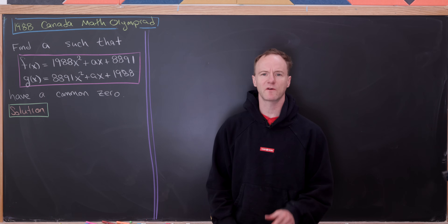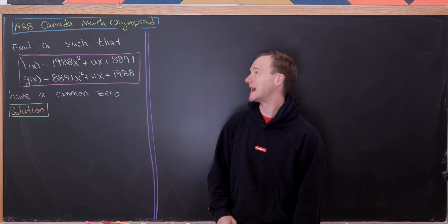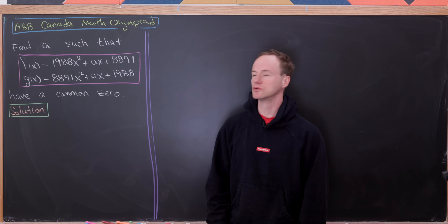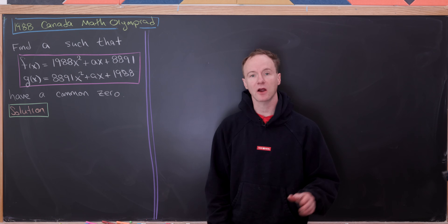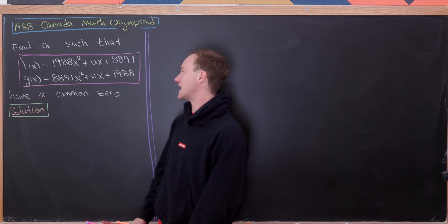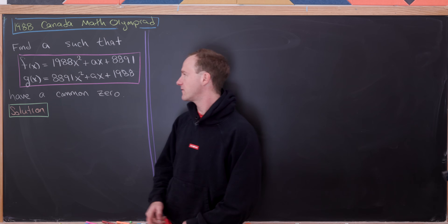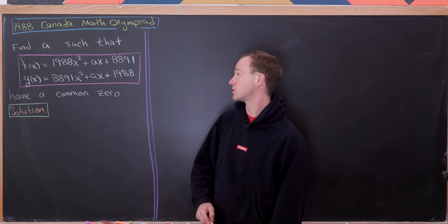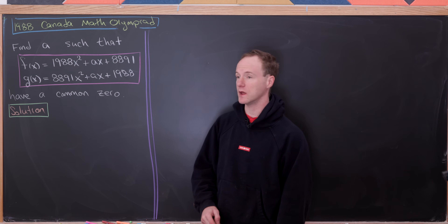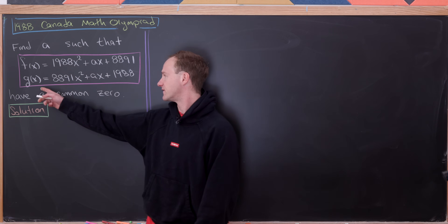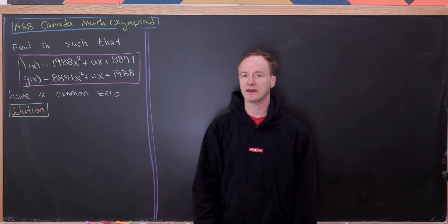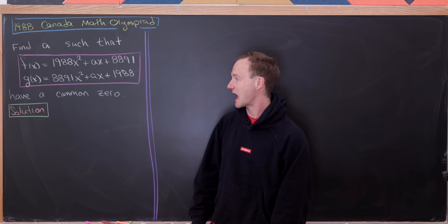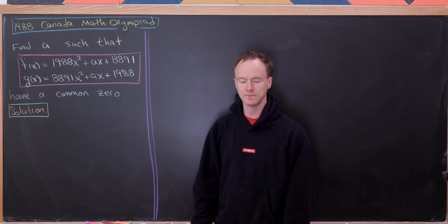Let's look at this nice problem from the 1988 Canadian Math Olympiad. This involves roots of polynomials. Our goal is to find a number a so that the polynomial f(x) = 1988x² + ax + 8891 and the polynomial g(x) = 8891x² + ax + 1988 have a common zero.